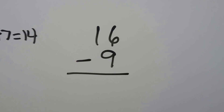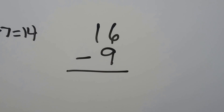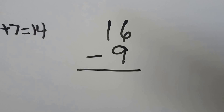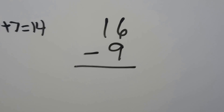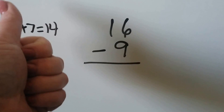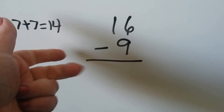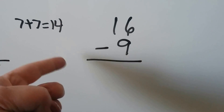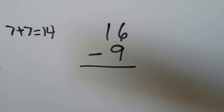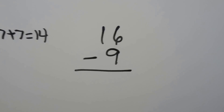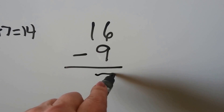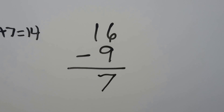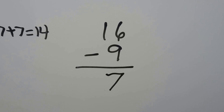16 minus 9. We can start at the 9 and count up to 16: 9, 10, 11, 12, 13, 14, 15, 16. That was 7 fingers. 16 minus 9 is equal to 7.